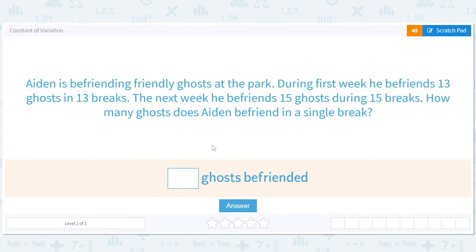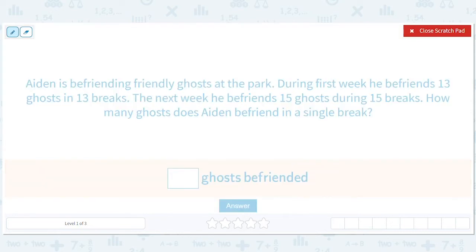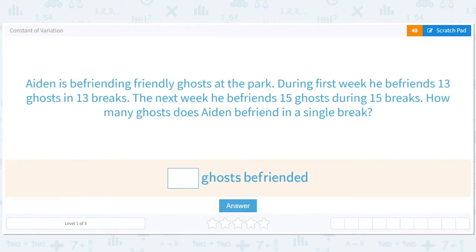It's time for some constant of variation problems. So constant of variation is how one thing changes with respect to another thing.